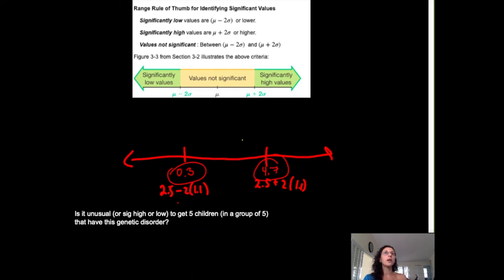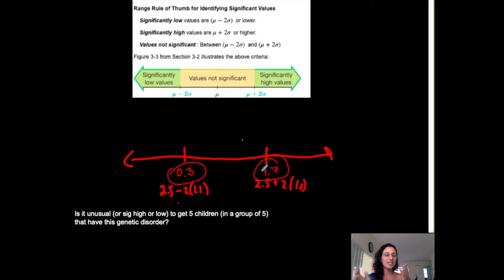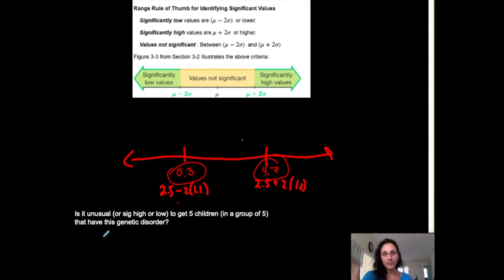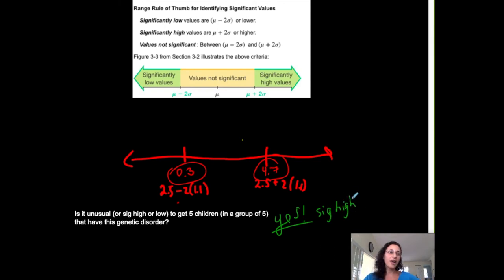You could do it two ways. One way is to use the range rule of thumb. We already calculated that anything greater than 4.7 is significantly high, anything less than 0.3 is significantly low, and anything in between is non-significant or usual. Since five is greater than 4.7, yes — it is unusual, it is significantly high to get all five children in a group of five with this genetic disorder.